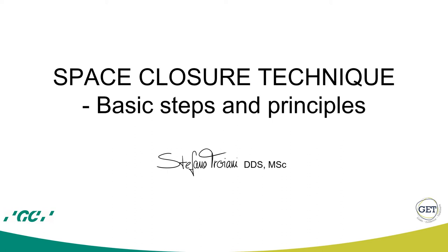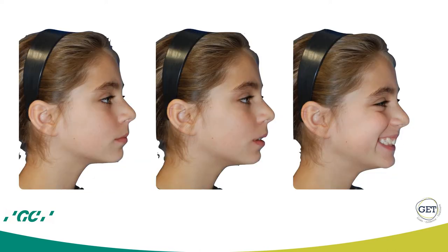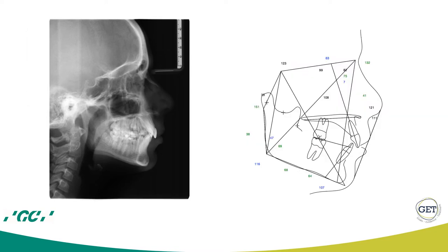In the second part of our space closure seminar, I will focus on the basic steps for space closure. I will use Alina as an example. Alina is a patient that displays a very slight insufficient lip closure, visible also in the profile — the lower lip is strained. Looking at the lateral ceph and the panoramic image, her incisors are in front of the anterior nasal spine and in front of the soft tissue pogonion, which is also partially confirmed by the cephalometric analysis that presents a very slight posterior pattern of growth.